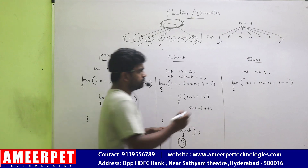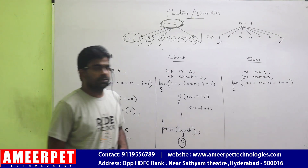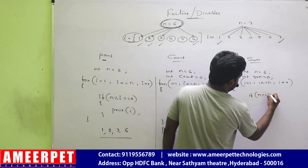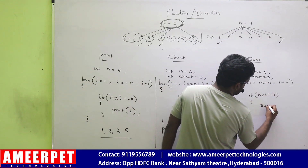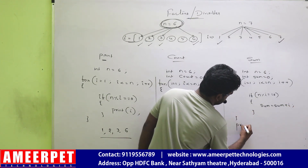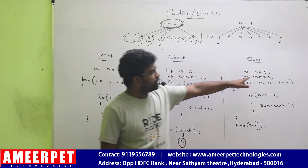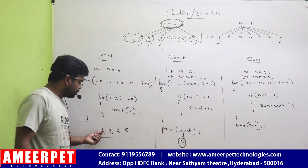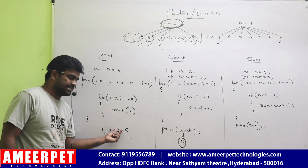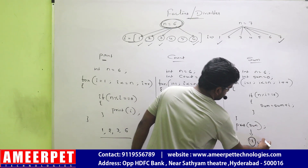Next, find the sum. Take the variable: int sum equal to 0. The same condition: if N mod I equal to 0, then sum equals sum plus I. Outside the loop, print that sum. First factor 1 is added: 0 plus 1 is 1. Then 1 plus 2 is 3. Then 3 plus 3 is 6. Then 6 plus 6 is 12. So the sum displayed is 12.